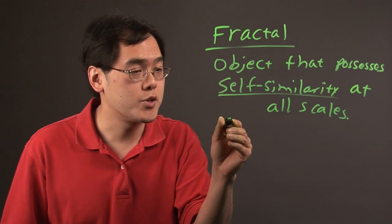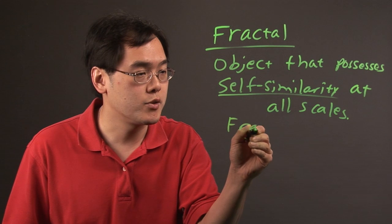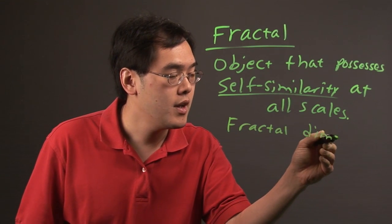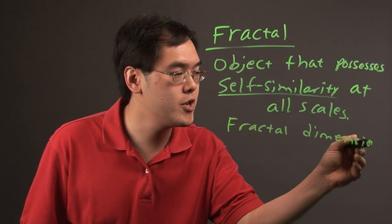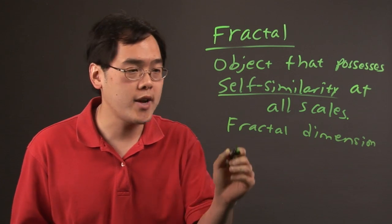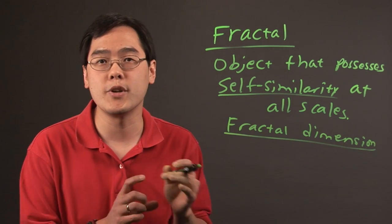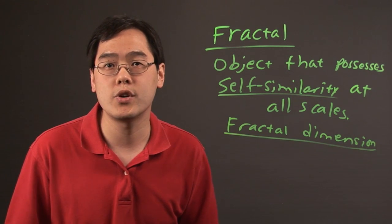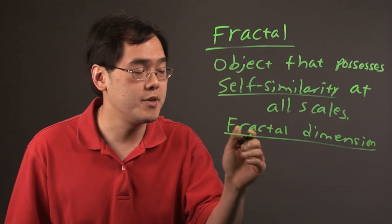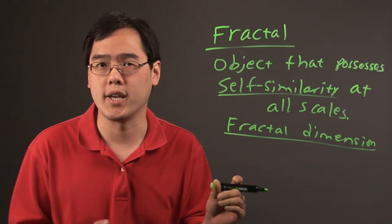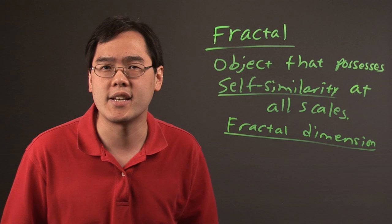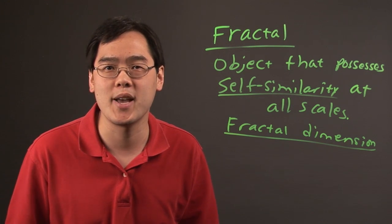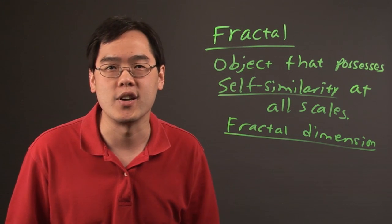Now, fractals possess what's known as fractal dimension. Now, you're familiar with one dimension, two dimensions, three dimensions, but sometimes fractal dimension goes into dimensions that are between the integers. So, in other words, an object could possess a dimension that's between two and three. So, like maybe two and a half dimensions or two and a quarter dimensions. It sounds kind of strange and fascinating at the same time, but that's due to the unique nature of fractals.